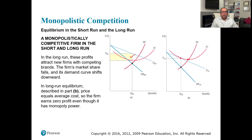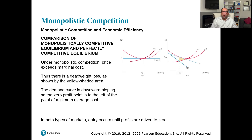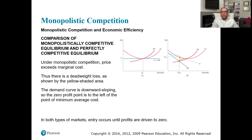In the long run, monopoly can earn economic profit, but monopolistic competition and perfect competition both earn zero economic profit. Only pure monopoly can earn economic profit in the long run. In a competitive market, the firm produces at the point where average total cost is at its minimum. But in a monopolistically competitive market, the firm produces before that point, meaning it is not operating at capacity or at the minimum average total cost.